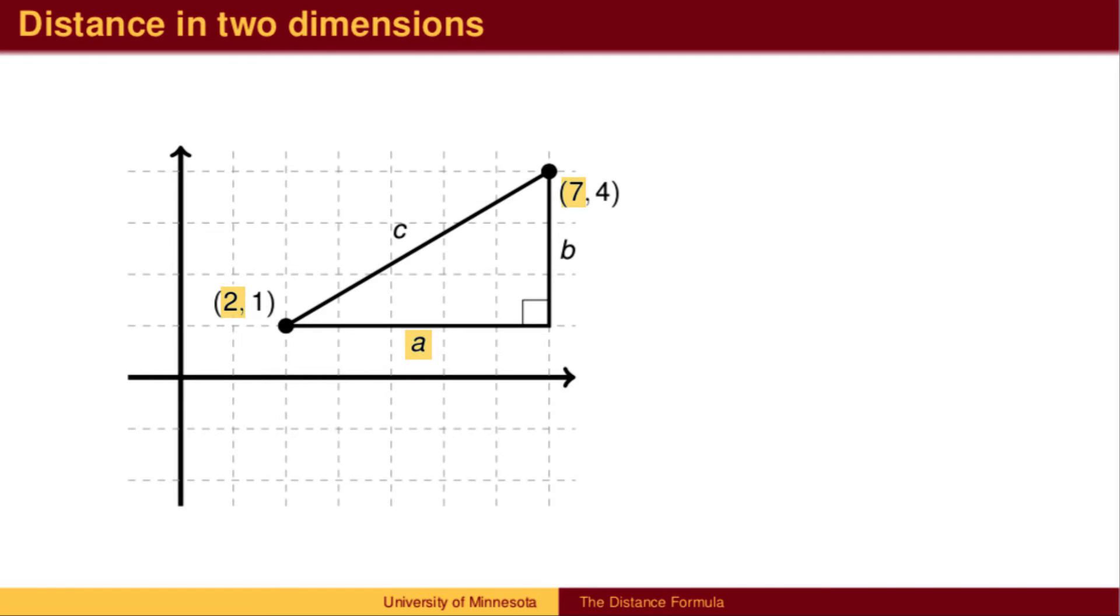In two dimensions, we have a change in both the x-values and y-values. The distance we are looking for, the distance between (2,1) and (7,4), is the hypotenuse of a right triangle.